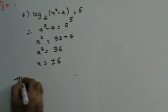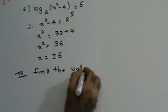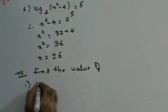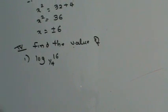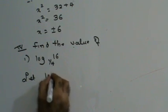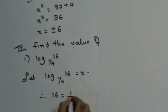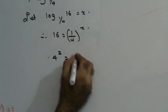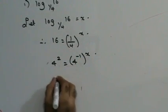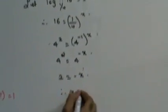Last thing — find the value of log 16 to the base 1 by 4. Let log 16 to the base 1 by 4 equal x. Therefore 16 is (1 by 4) raised to x. 16 is 4 squared, and 1 by 4 is 4 raised to minus 1, so 4 squared is 4 raised to minus x. Therefore 2 equals minus x, so x is minus 2. We'll stop here for the day. Thank you very much.